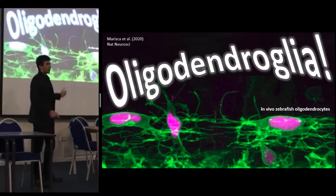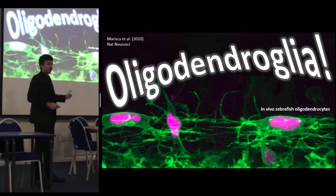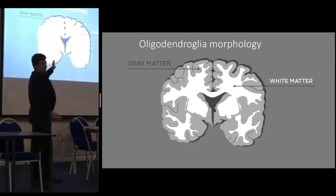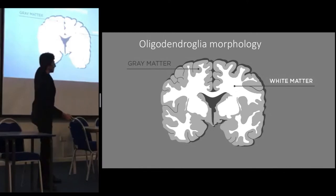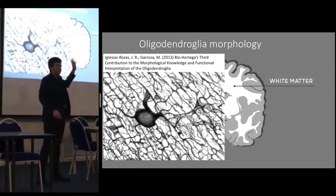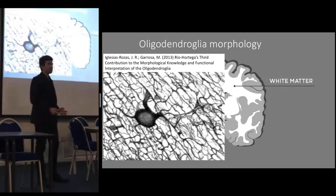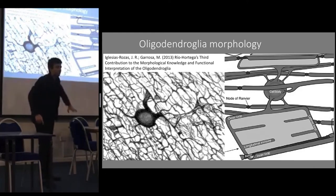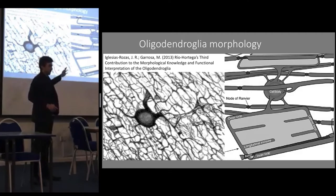Moving on to oligodendroglia. You might have heard of Schwann cells — oligodendroglia have a similar function in that they myelinate axons, but instead of myelinating one axon, they can myelinate up to 30 axons, mainly in the white matter. The white matter is where the axons are, compared to the grey matter where the cell bodies and dendrites are. Oligodendroglia myelinate during early childhood development, which is why babies can be very clumsy — their myelin hasn't fully formed yet. They wrap their processes around axons, and when unrolled, those processes look like trapezoids.